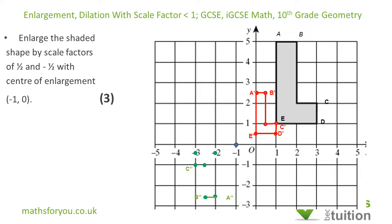For D prime prime — from the center of enlargement, D is 4 to the right and 1 up. With scale factor minus one half, I move 2 to the right and a half down. That point is D prime prime.